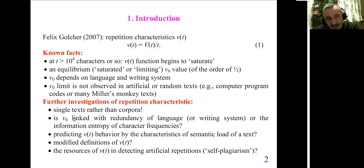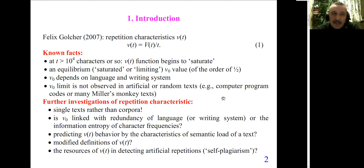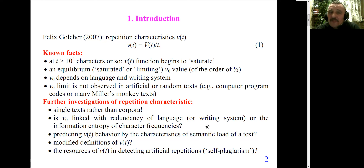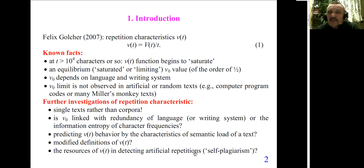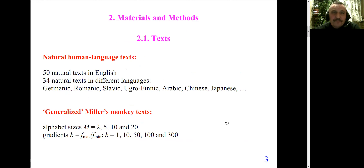The second interesting point is that it is hard to link the V(t) characteristic with some other characteristics of text. It may be information entropy; it may also be the parameters of semantic load of the text. Another question is whether modified definitions of V(t) can be of some practical use, and in particular, can the V(t) characteristic detect artificial repetitions in text?